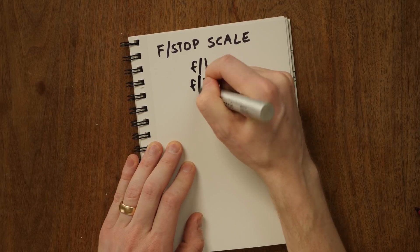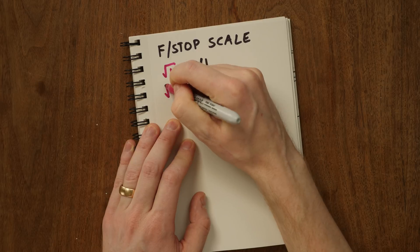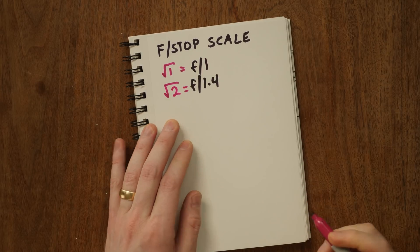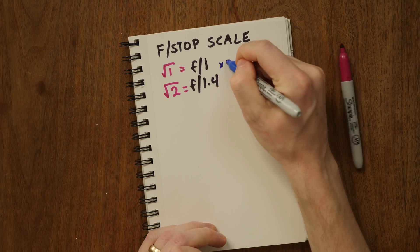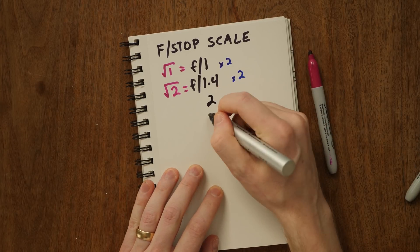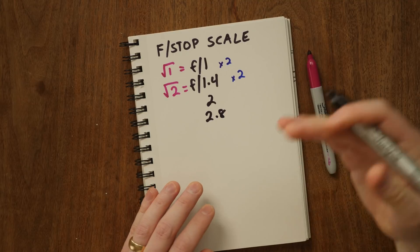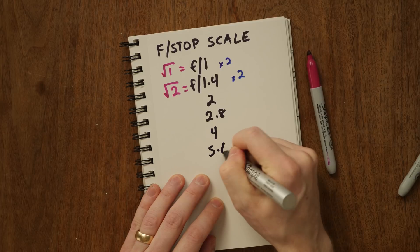That's f1, f1.4. If you know those two numbers, you know the rest. If you really can't remember those two numbers, maybe you can remember that the square root of 1 equals 1, and the square root of 2 equals 1.4. If we just take those two numbers, f1 and f1.4, and we double each of them — times 2, times 2 — now we get f2 and f2.8. Those are the next two stops on the scale. If I double those two numbers, I get f4 and f5.6.